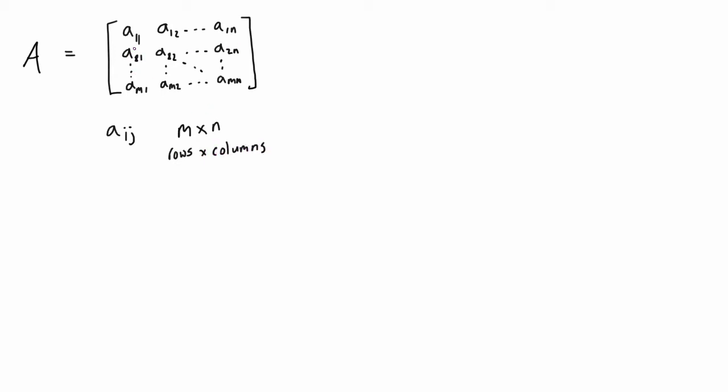If we look at some of the other entries, this entry would be the second row and the first column, second row second column. And if we come down to the very far bottom right entry, we would have the mth row and the nth column.